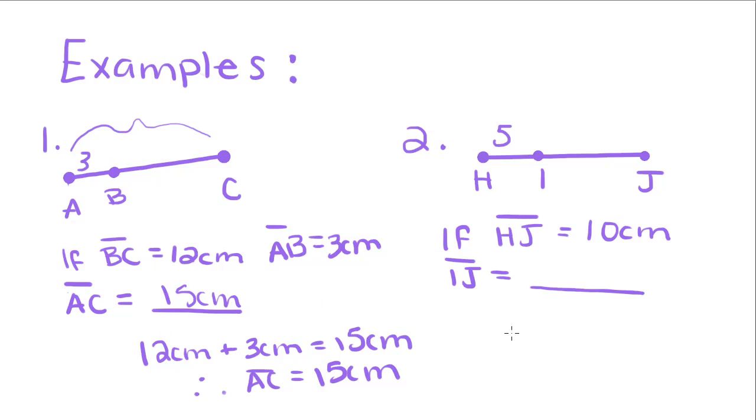So on the second one, this one's a little different. They tell us what the whole length is. If HJ, which is the entire line segment, is equal to 10 centimeters, what is this part equal to? So using the same idea, we're going to take the whole length minus part of the length to find out what the other part of the segment equals. And IJ equals 5 centimeters.